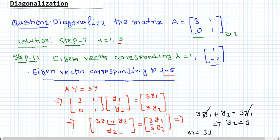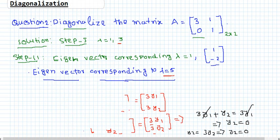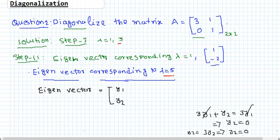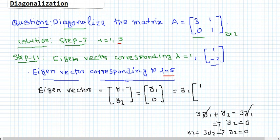From these two equations we get y2 = 0, and y1 can be any nonzero real number. So the eigenvector is [y1, 0] = y1 * [1, 0]. All eigenvectors corresponding to eigenvalue 3 are scalar multiples of [1, 0]. When we put y1 = 1, we get the eigenvector [1, 0]. We take [1, 0] as our representative eigenvector for lambda = 3.